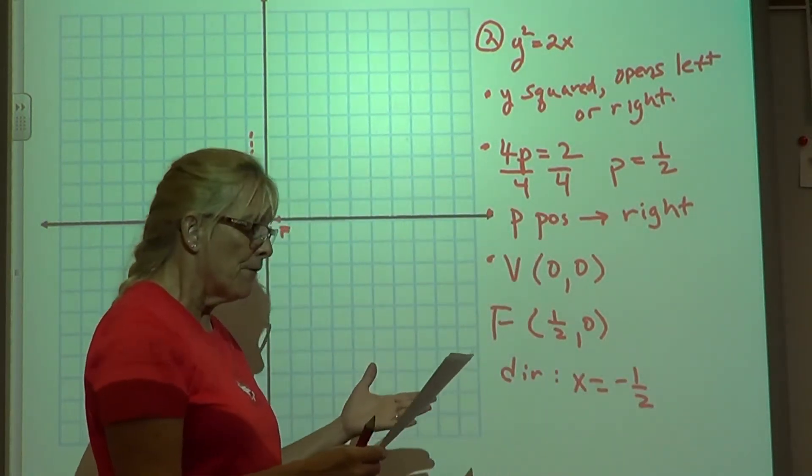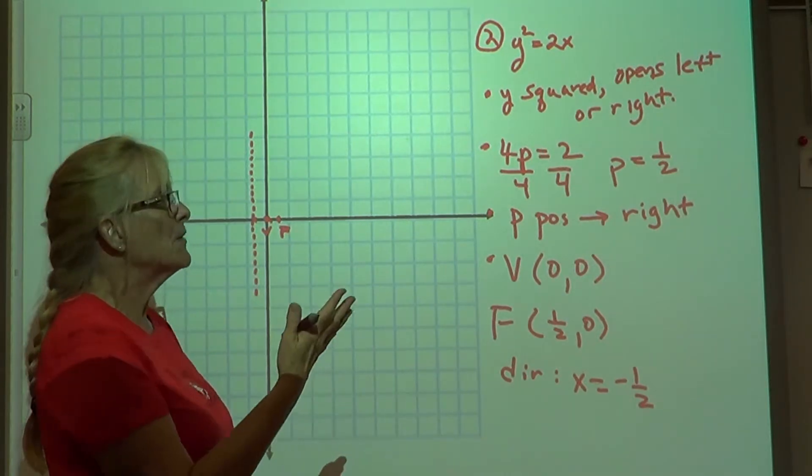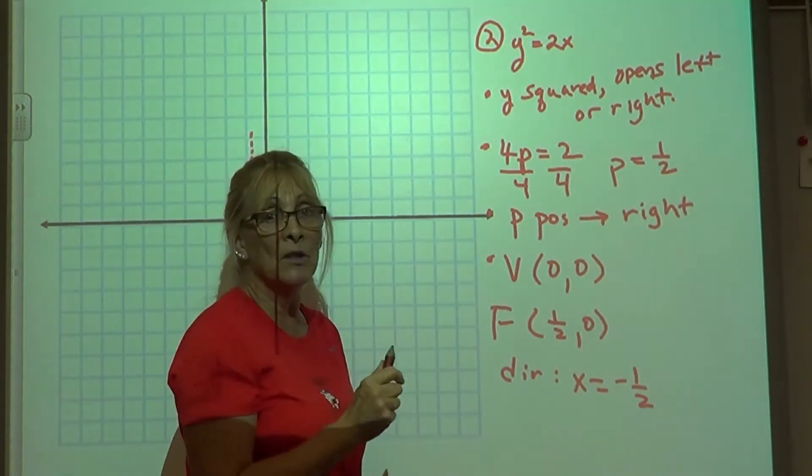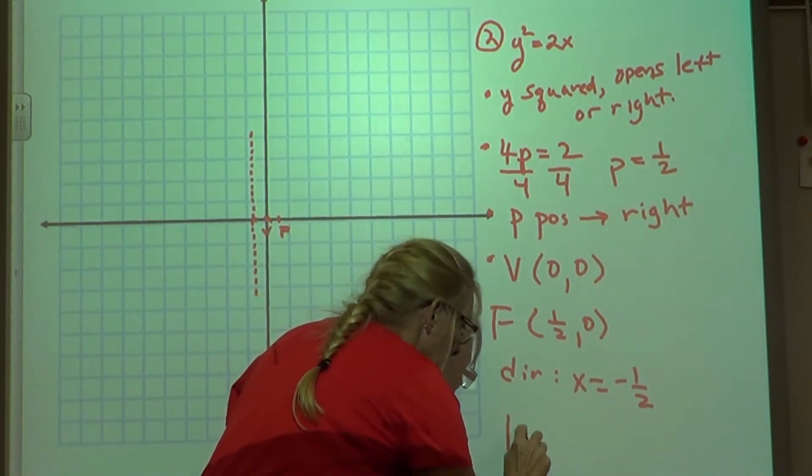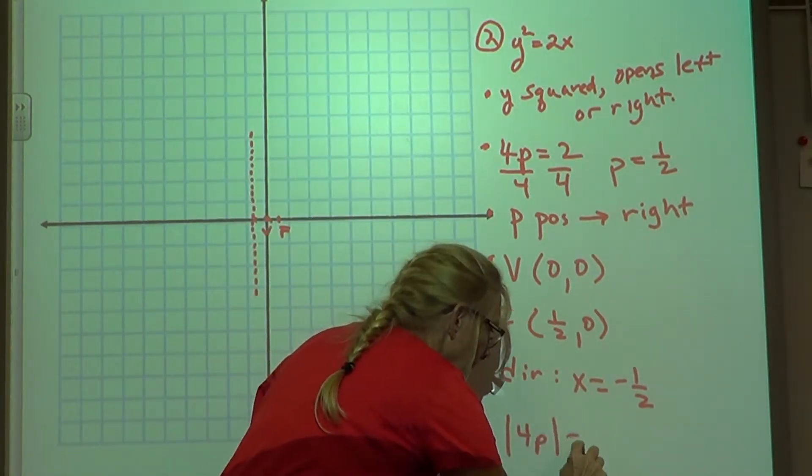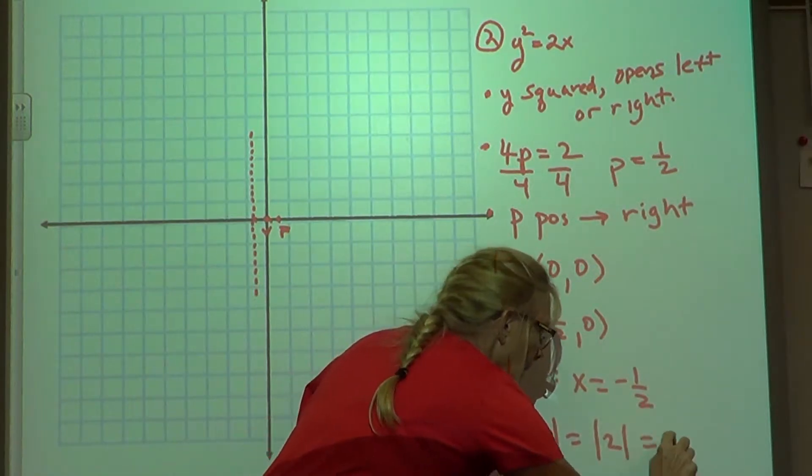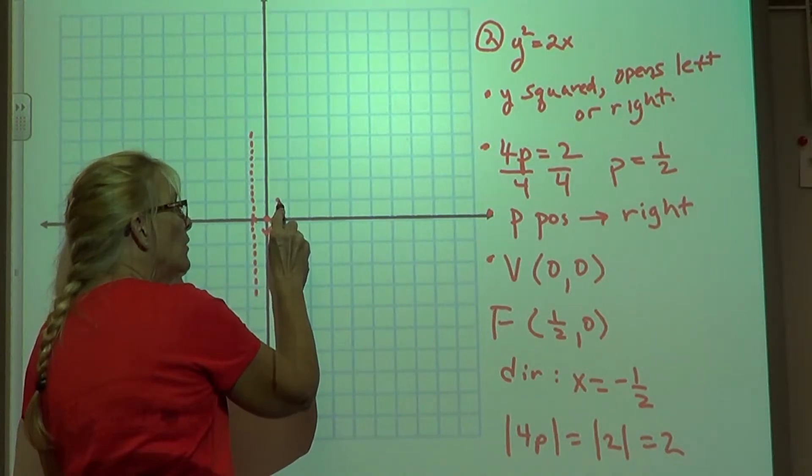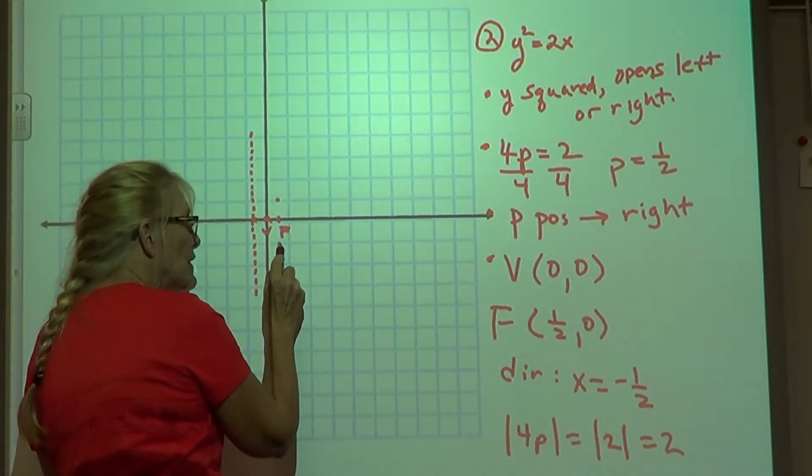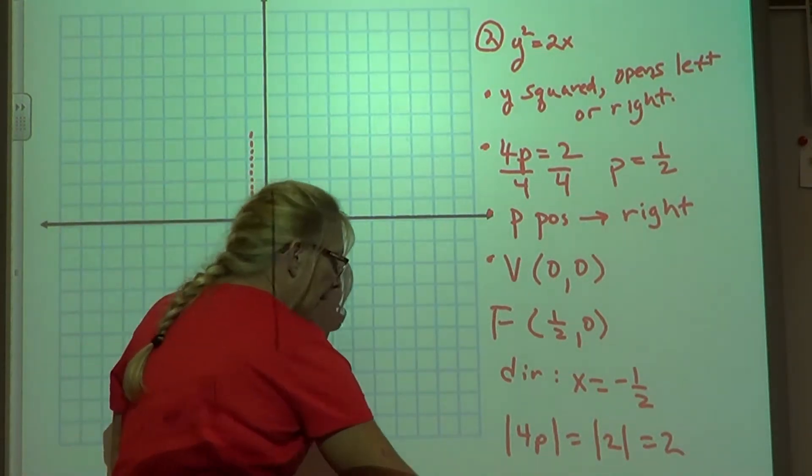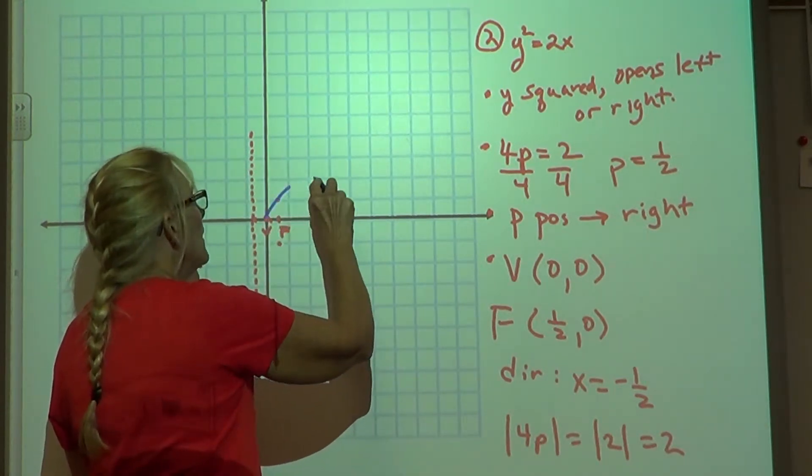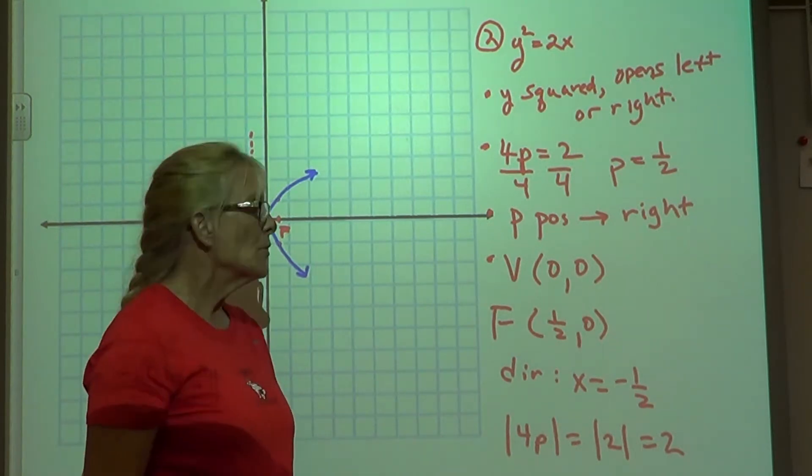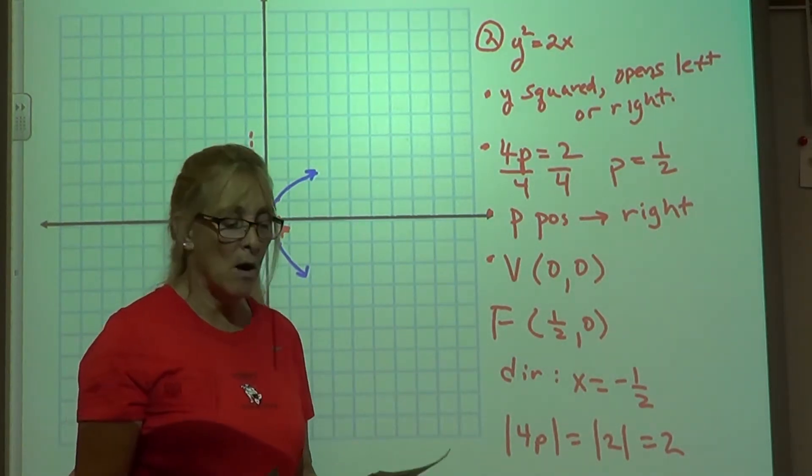Okay? So there's some information for us, but now we have to have the width of the parabola. Well, since it's two units wide, we have to go one unit to each side. So from the half, we're going to go one unit here. From the half, we're going to go one unit here. And this parabola will open this way, to the right. So we have our information, and this is problem number two.